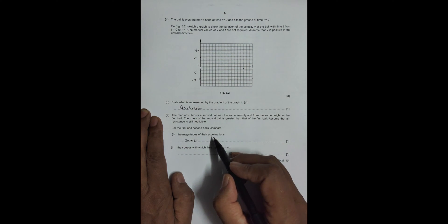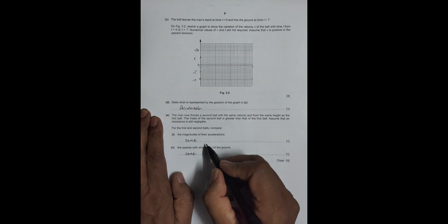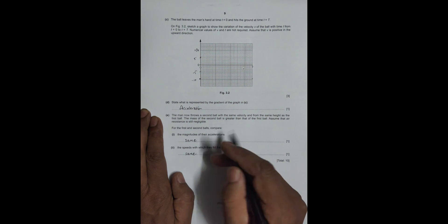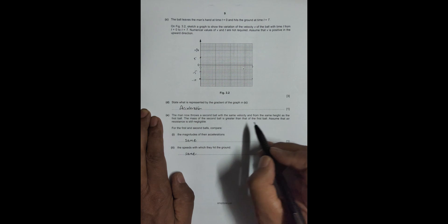It will be the same because if there is no air resistance, the acceleration should be the same. The speed with which they hit the ground also should be the same, because if a is the same, then all other quantities will also be the same. That happens when air resistance is negligible or absent.